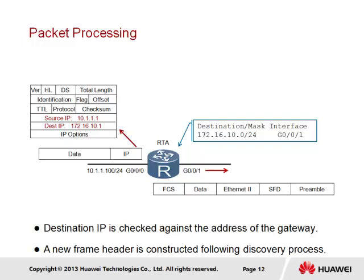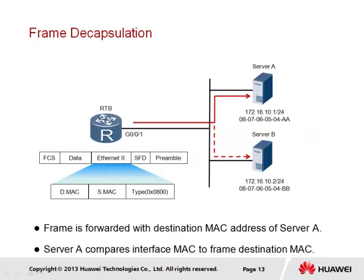If the path is known, as shown in the example by the 172.16.10.0 entry via interface Gigabit Ethernet 0/0/1, the gateway will proceed to encapsulate the IP packet in a new frame header, but not before it has verified that the physical path is known. If the physical path is not known, the gateway must employ ARP to determine the new path. The new frame header will use the MAC address of the Gigabit Ethernet 0/0/1 interface as the source MAC address, and the next hop will be the destination MAC address. Following encapsulation, the frame-forwarding process is undertaken to propagate the frame over the remaining path to the intended destination.